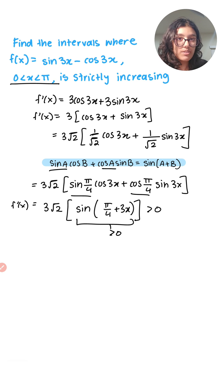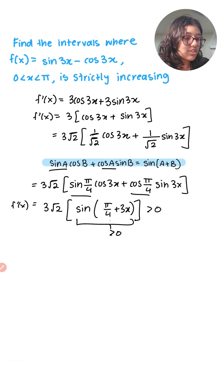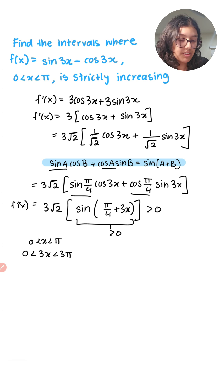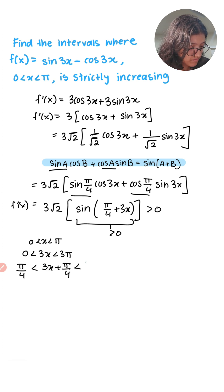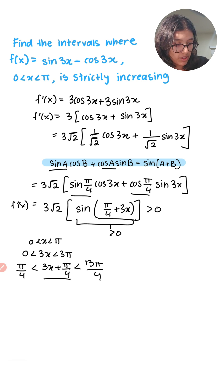I notice that the argument is 3x + π/4, not just x, so we have to find the range in relation to 3x + π/4. I'm going to multiply everything by 3 and add π/4 to everything. The reason I did this is that now I know the new domain of the part 3x + π/4.